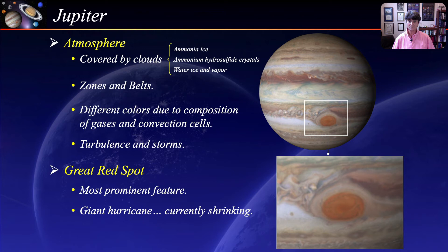Juno's first pass in July of 2017 measured the storm to be 200 miles deep and it has shrunk to about 1.5 times the diameter of Earth. This storm has been tracked since its discovery in 1831.